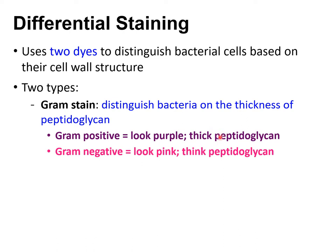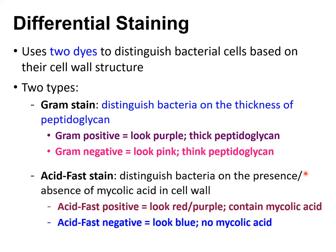Those that have a pretty thick layer of peptidoglycan are going to be stained purple when you perform the gram stain. Those that have a thin layer of peptidoglycan are going to look pink under the microscope. We call those with a thick peptidoglycan layer gram positive bacteria, and those with a thin peptidoglycan layer we call gram negative bacteria.